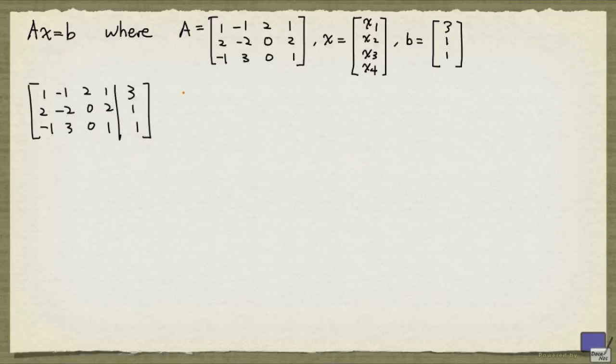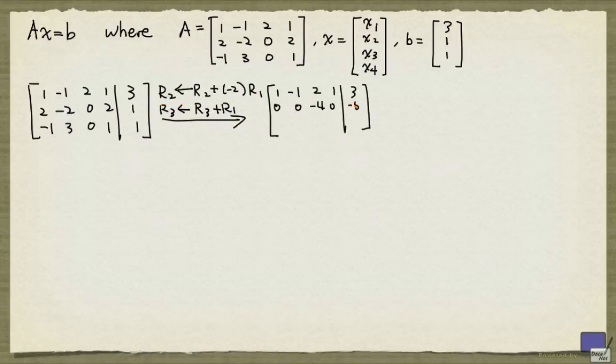If we look at this matrix, we have a leading one in the first row, but we have non-zero entries underneath it. So we need to perform elementary row operations to make sure that the entries below our leading one in the first row are all zero. We can accomplish this by replacing row 2 with row 2 plus minus 2 times row 1, and replacing row 3 by row 3 plus row 1. We are going to perform both operations in one go. And this is the matrix that we will end up with.